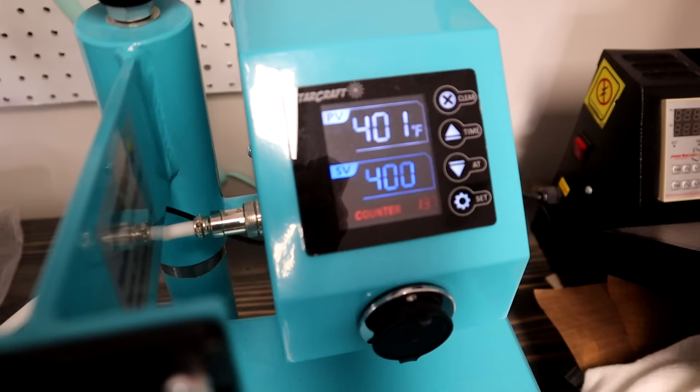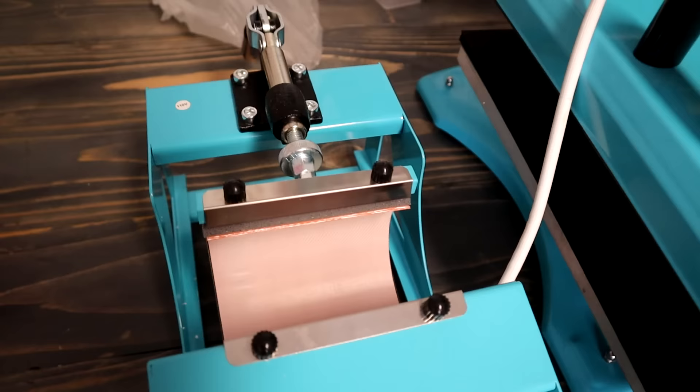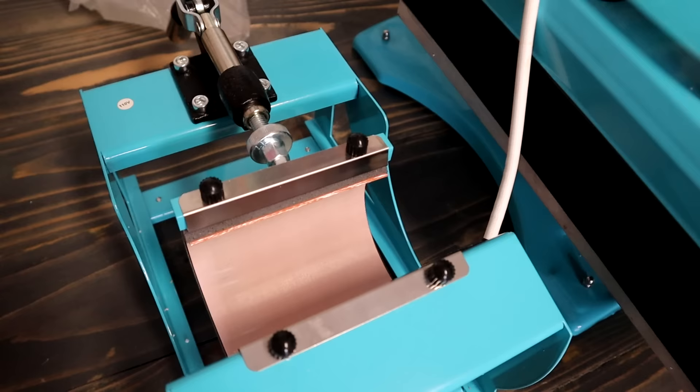The first thing that you're going to do is heat your heat press up to 400 degrees. I'd say between 385 and 400. I set mine to 400. The heat press that I have is the Starcraft eight-in-one heat press and it comes with this mug attachment and it comes with different plates and you can change the plates out for the different size cups, tumblers and mugs. I'm using the one that came in the mug attachment.